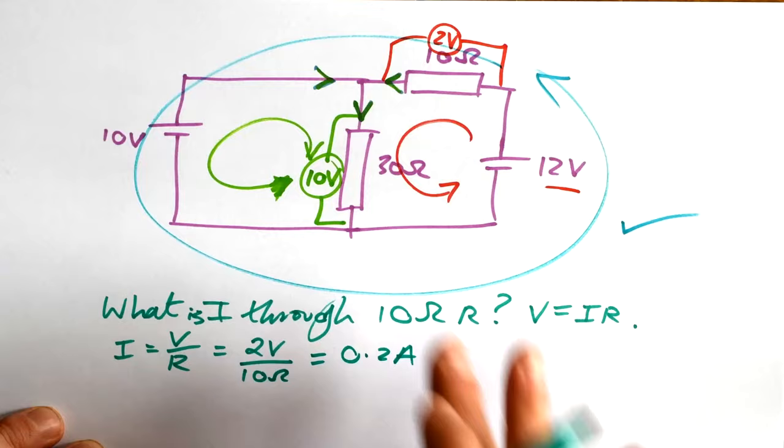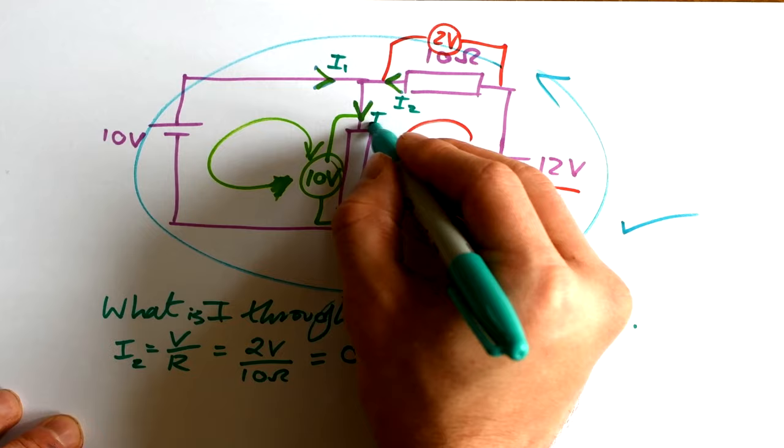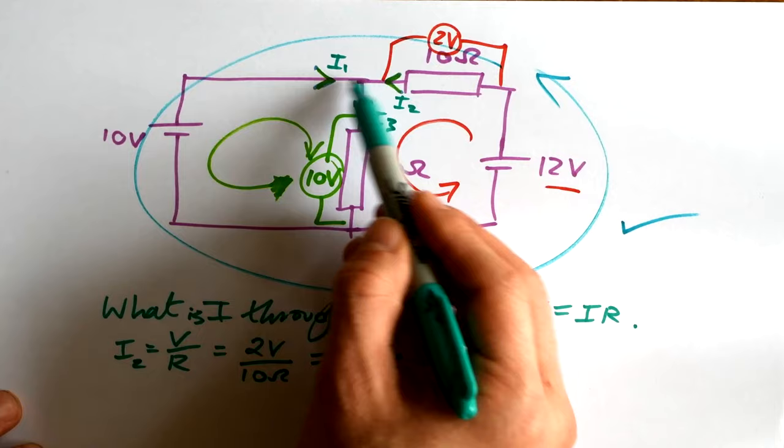Tell you what, let's call that current there I2. Let's call this one I1. Let's call this one I3. Can we figure out what I1 is straight away? No, we can't because we have this branch here and we need to know I3 first. So let's find out I3.